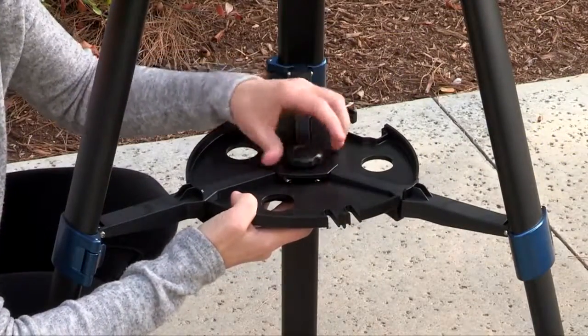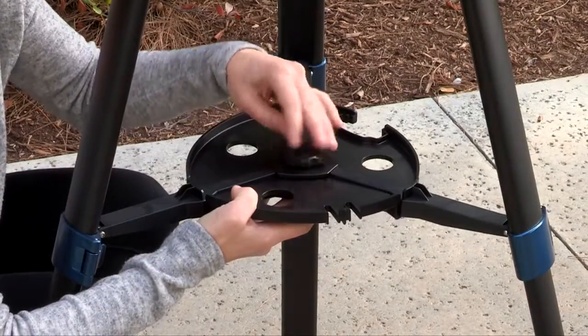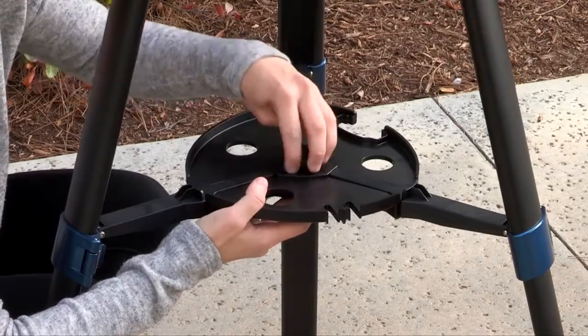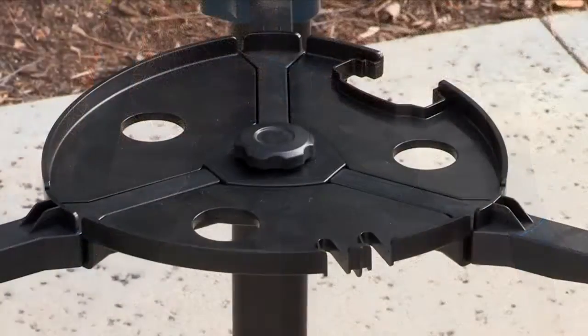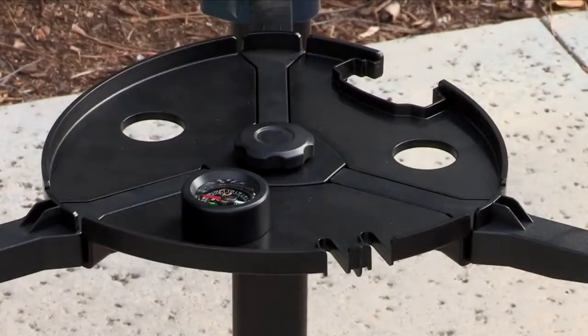Attach the accessory tray to the tripod by threading the center bolt into the tray until firm. Position the tripod where you want the telescope to be and check that the top of the tripod is approximately level. Use the included bubble level compass to level the tripod head.